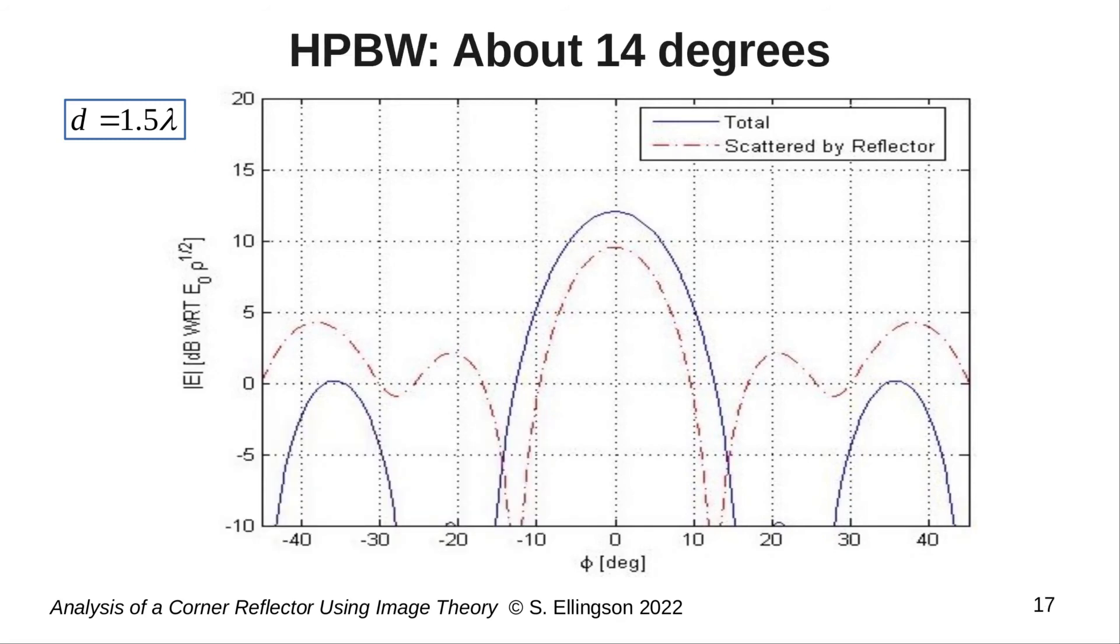With this plot in hand, we can obtain the half power beam width simply by reading it off the plot. Here we find the half power beam width is approximately 14 degrees, and that pretty much wraps up the analysis.